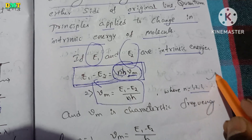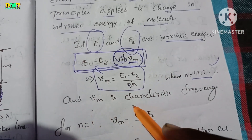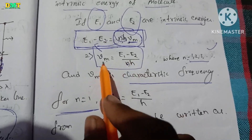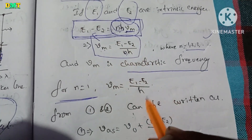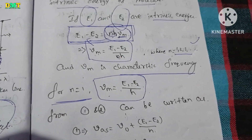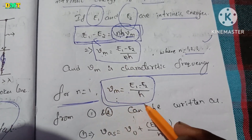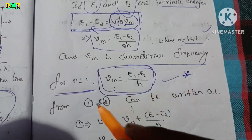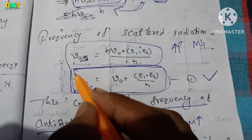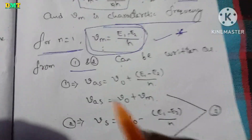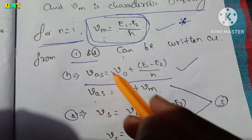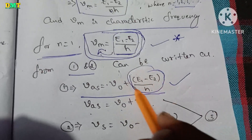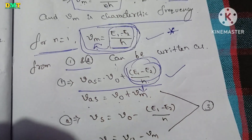Here n ranges from one to infinity, and mu_m is the characteristic frequency of the molecule. When n equals 1, mu_m equals (E1 minus E2) divided by H. Now substituting mu_m, we get: mu_as equals mu₀ plus mu_m.